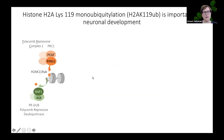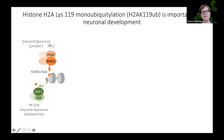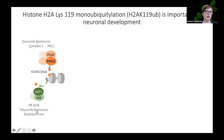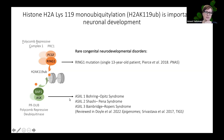The particular histone modification I'll speak about today is monoubiquitylation of histone H2A lysine 119 — H2A ubiquitylation for short. This is a monoubiquitylation, not a polyubiquitylation; it does not target H2A for degradation. It is deposited by Polycomb Repressive Complex 1 (PRC1), whose core is the heterodimer of the Ring1 protein and the Polycomb Group Ring Finger protein, and it is removed by the Polycomb Repressive Deubiquitinase complex (PR-DUB), whose core is BAP1 and Additional Sex Combs and its homologues.